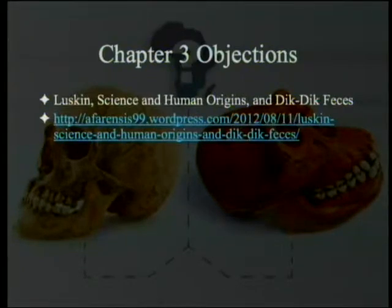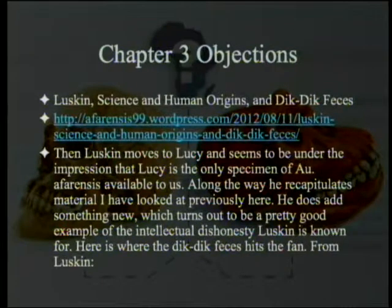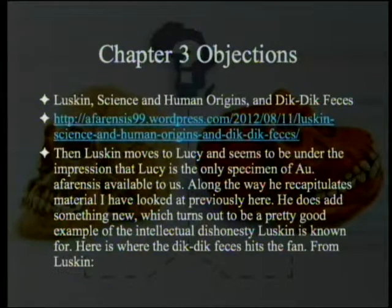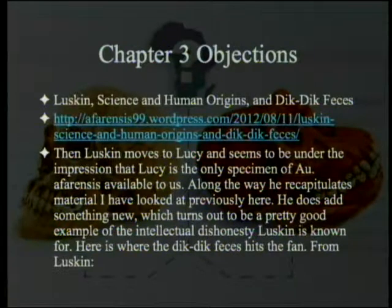The chapter heading is 'Luskin, Science and Human Origins, and Dik-dik Feces' — I forgot to italicize Science and Human Origins, which is obviously a reference to the book. Then Luskin moves on to Lucy and seems to be under the impression that Lucy is the only specimen of Australopithecus afarensis. He does add something new, which turns out to be a pretty good example of what the reviewer calls the intellectual dishonesty Luskin is known for. This guy obviously doesn't think too much of Luskin. Here's where the dik-dik feces hit the fan — the dik-dik feces, in case you're interested, apparently refers to a place where dik-diks came to relieve themselves quite frequently. Dik-diks are small antelopes.